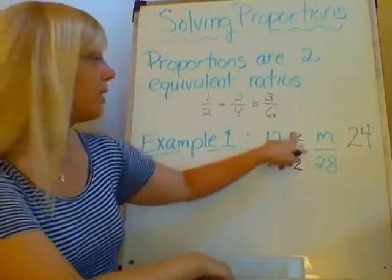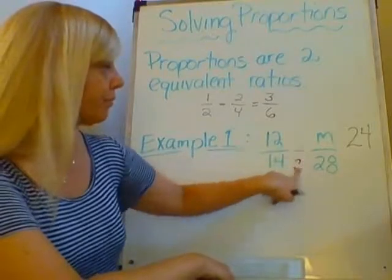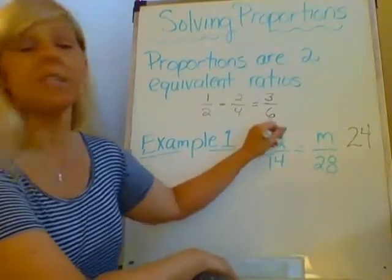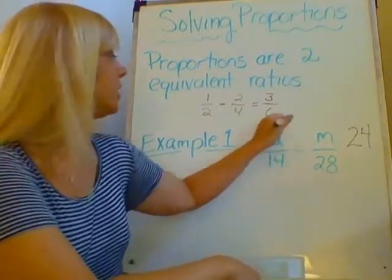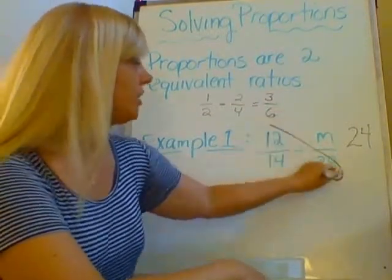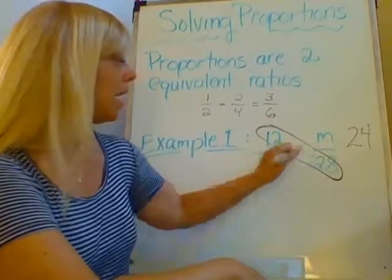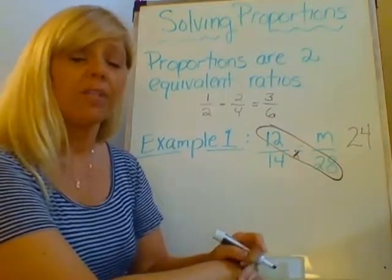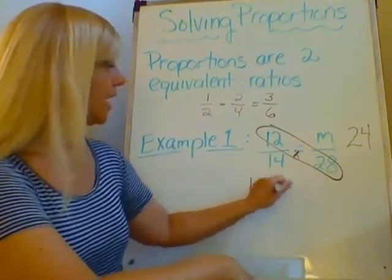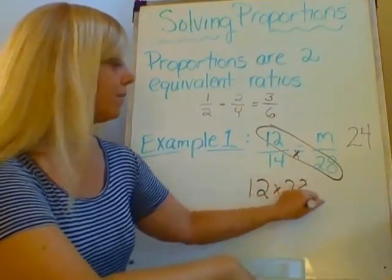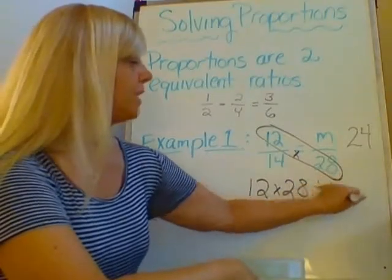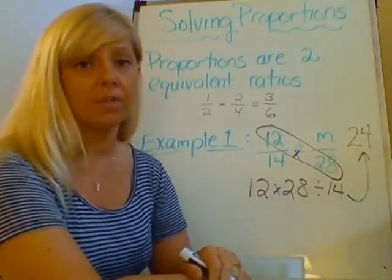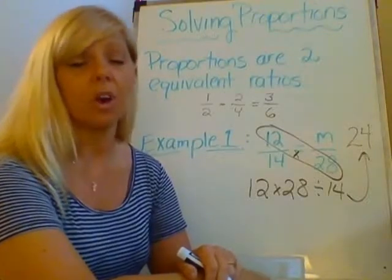So what you're going to do is you're going to take the two that are diagonal from each other and we're going to multiply them, because that's what the process is called, cross multiplication. So we're going to go across from each other and we're going to multiply, and then we're going to take the number that has been left out and divide it by that number. So if I take 12 and times it by 28 and then divide it by 14, I will get 24 in my calculator, and that is a process called cross multiplication.